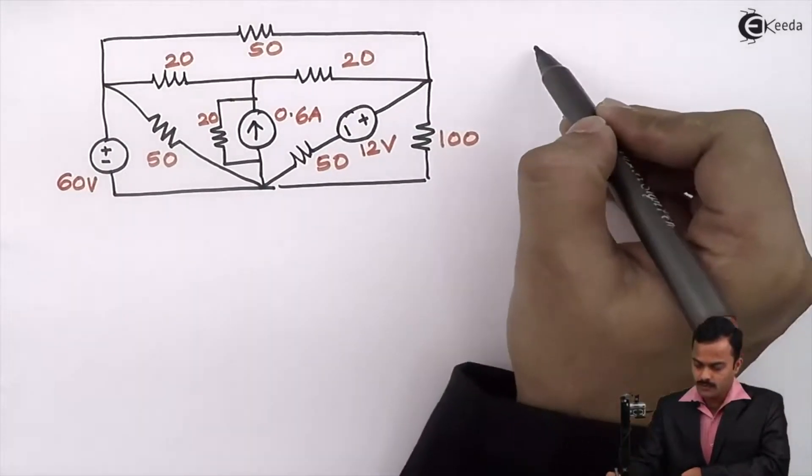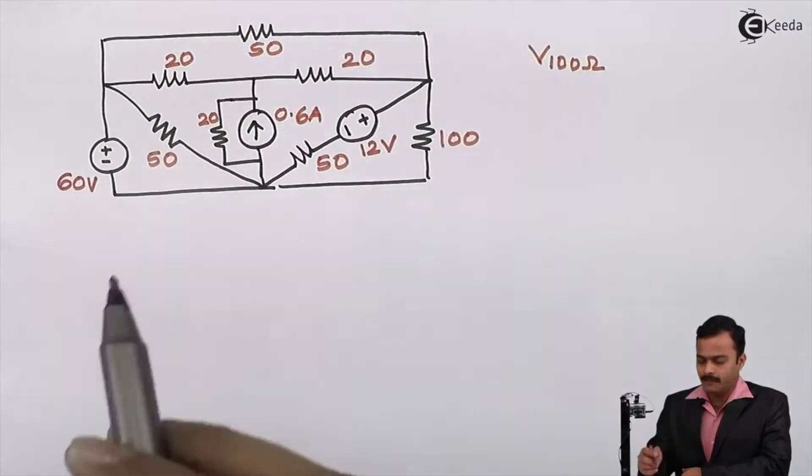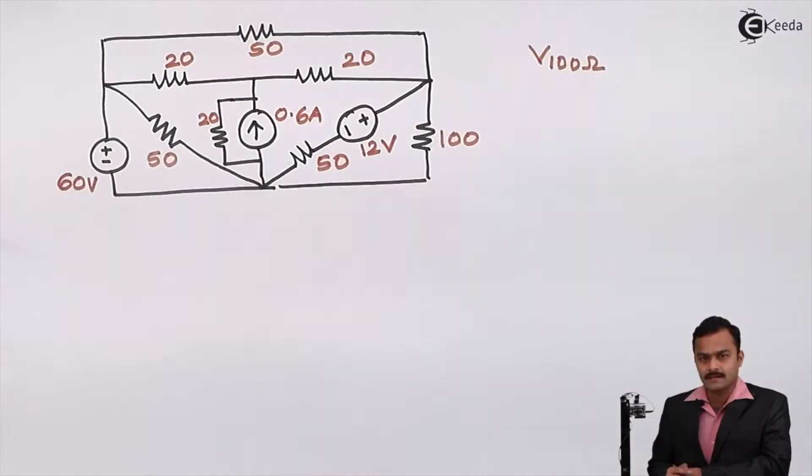The objective is to find out voltage across 100 ohm resistance. Suppose I ask you to apply mesh analysis. If you count the number of loops: one, two, three, four, five, six loops are there. Six variables you will get. Worst case you can reduce this to one, but still the number of loops will be more than three. So mesh analysis may not give you an answer quickly. For that, nodal is the best option. Though the problem is looking complicated and lengthy, nodal analysis will give you an answer in less number of steps.